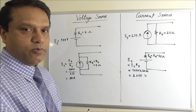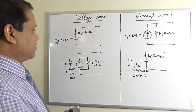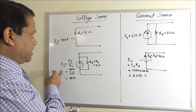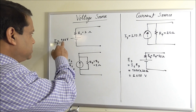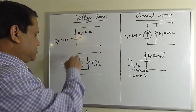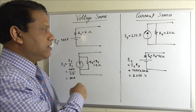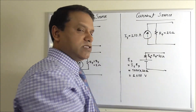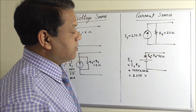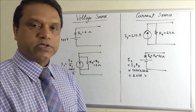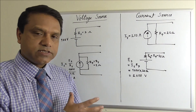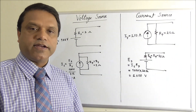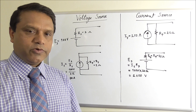In summary, when converting a voltage source to a current source, you divide the voltage source value by the resistance to get the current source value — for example, 50 amperes here. Conversely, when converting a current source to a voltage source, you multiply the current by the resistance to get the voltage. This conversion technique is sometimes very useful in solving circuits.